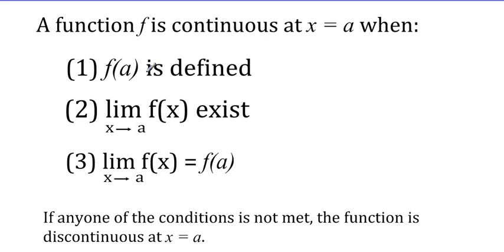So if we go through rule one and it doesn't work, that's where we stop. If f of a is not defined, we can stop right there. So let's have a look at a couple of graph examples and try to get a visual idea of what's happening.